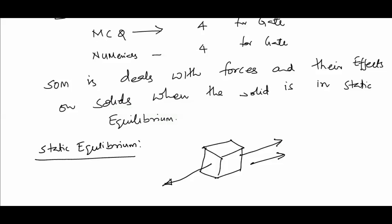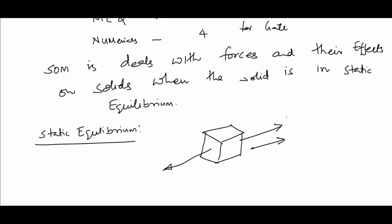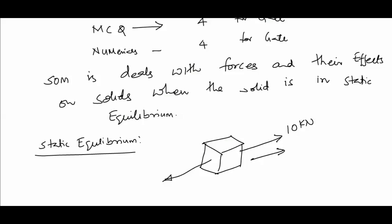To ensure static equilibrium, there must be a force equal in magnitude but opposite in direction. That means if you have 10 kilonewtons of force to the right side, there must be a force of equal magnitude in the opposite direction that keeps the body under static equilibrium. Now we understand what static equilibrium means.